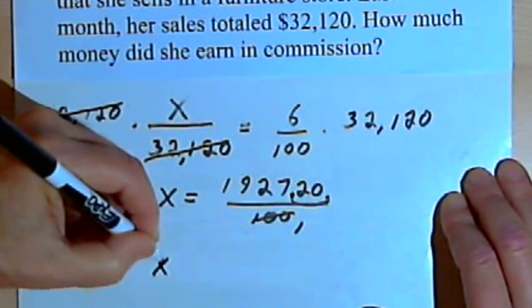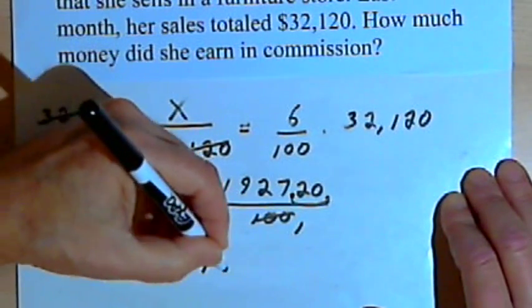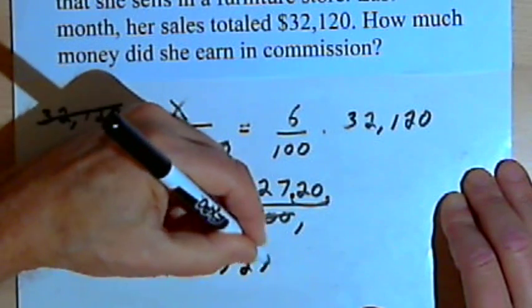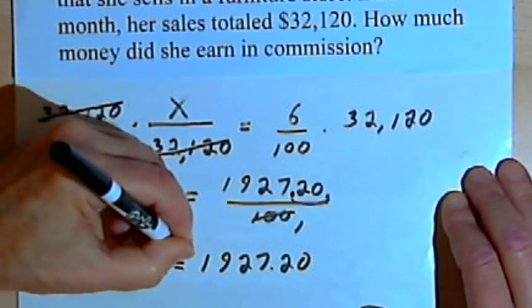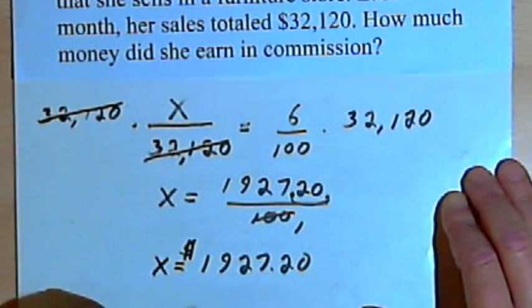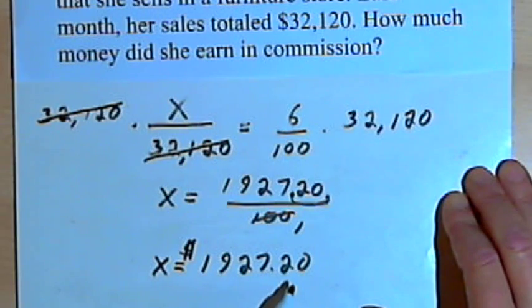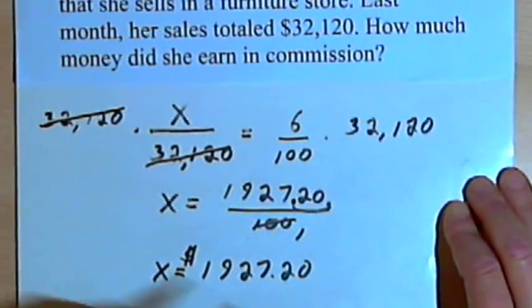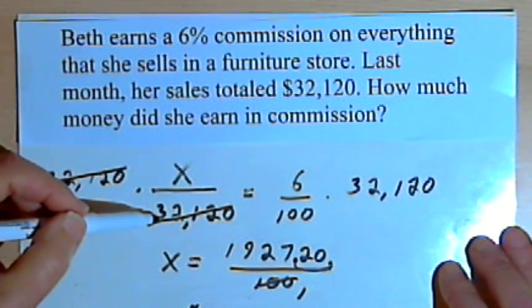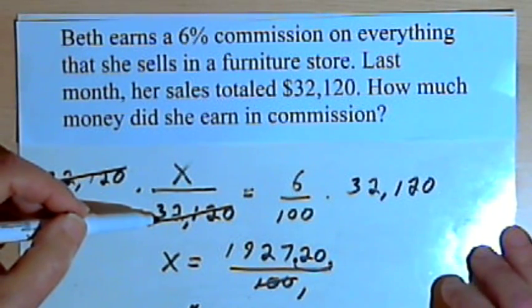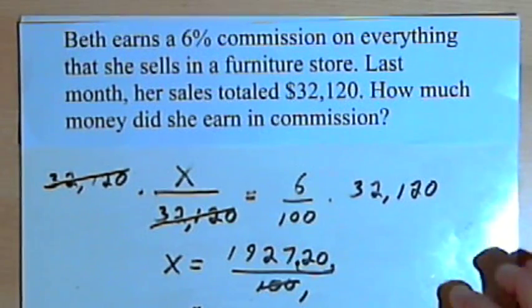So now I find that x equals $1,927.20. Since this is money, that would be 6% of the original amount that she sold, 32,120. Let's look at another one.